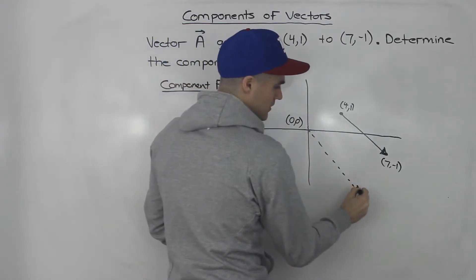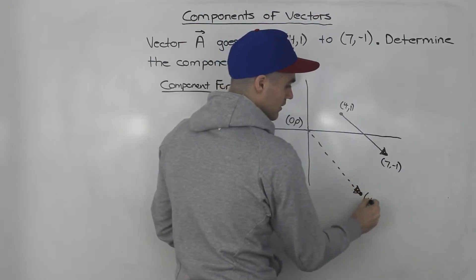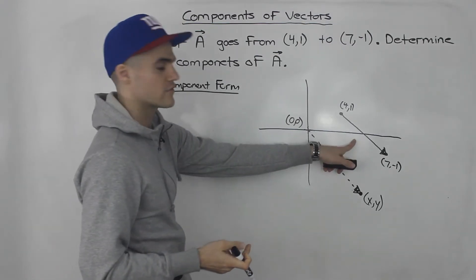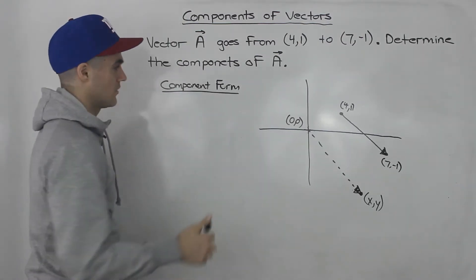Now we just have to find this point here (x,y), and that would be the vector in component form, the equivalent vector. The way you do that is pretty simple.